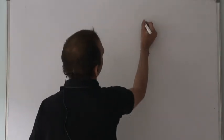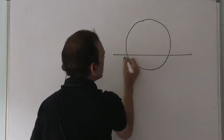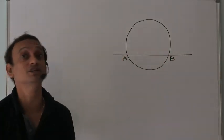Let me define another entity for you. So far what we've spoken of are the chords of a circle. A chord is a line that intersects the circle at two distinct points. If a line intersects the circle at two distinct points, then the part intercepted by the circle will be the chord of the circle.